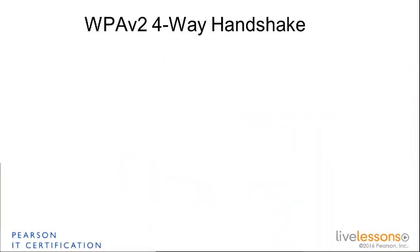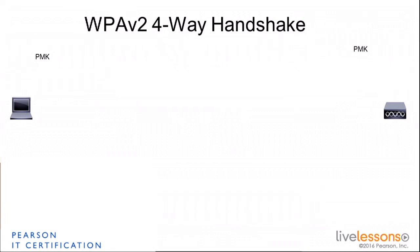When do these keys happen? Initially, we have the access points or the controller and the client, and both of them have the PMK — either because it's a pre-shared key, or because you derived the PMK through authentication via the authentication server, and the server returned the PMK to the access point while the client already has it. So what happens at that point is what we call the four-way handshake. It happens both in WPA v1 and WPA v2, but with a variation. Let's look at what happens in WPA v2.